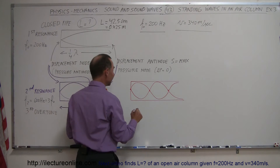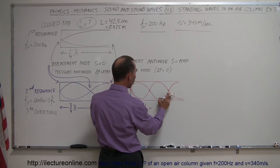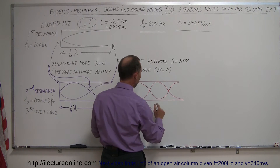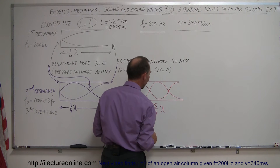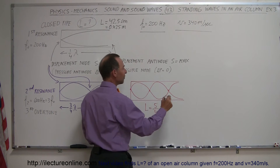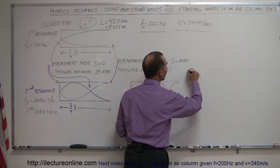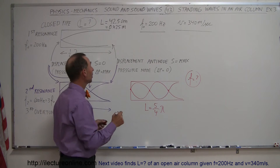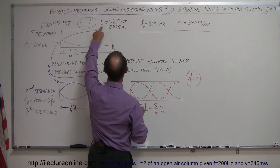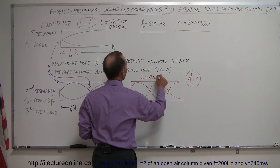This means that the total length of the tube is equal to a whole and a quarter, or five-quarters of a wavelength. Now, what frequency is required to produce this standing wave, given that the length of the tube is 0.425 meters?